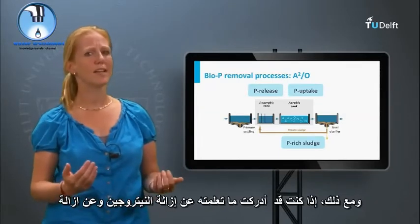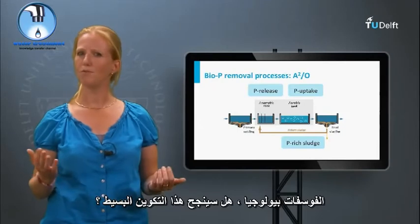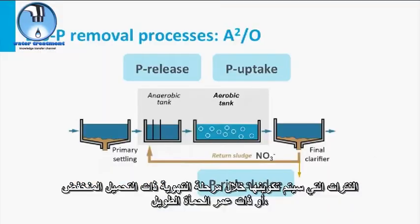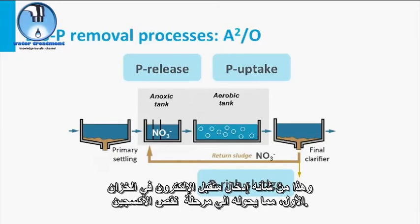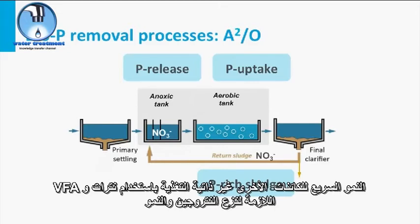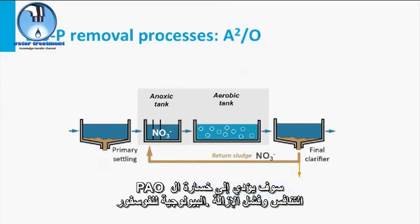However, if you consider what you learned about nitrogen removal alongside biological phosphate removal, would this simple configuration work? The nitrate that will be formed during aeration at low loading or long sludge ages would be returned to the anaerobic tank with the return sludge, making it anoxic. The rapid growth of other heterotrophs using nitrate and the VFA required for denitrification and growth will result in a competitive loss of the PAO and the failure of biological P removal.